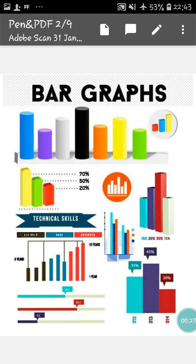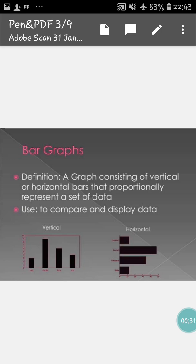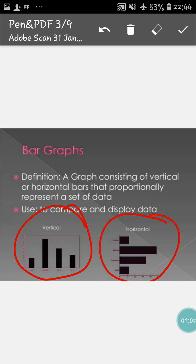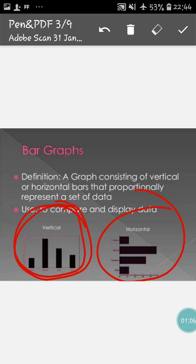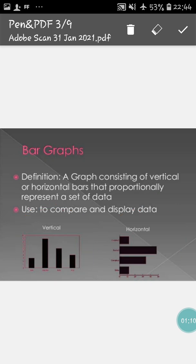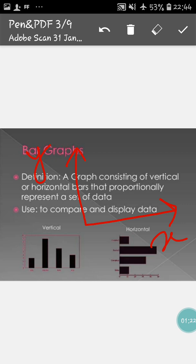First we will see what is a bar graph. The definition of bar graph is: a graph consisting of vertical or horizontal bars that proportionally represent a set of data, used to compare and display any information or data. Here in the bar graph the representation is done using bars — these are the horizontal bars and these are the vertical bars. There will be two axes: one is the x-axis and the other is the y-axis, and the bars will be placed on one of those axes.